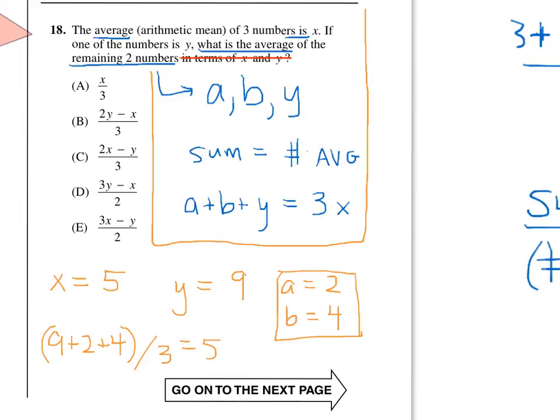Well, x over 3 would be 5 over 3, not 3. 2 times y minus x over 3 is something like 18 minus 5 over 3, which does not give us 3. Remember, we're looking for 2 plus 4 divided by 2, which is 3, because that's the average of the remaining two numbers. 2x minus y is 10 minus 9 over 3, that's 1 third, that's not 3. 3y minus x is 27 minus 5, which is 22 over 2.